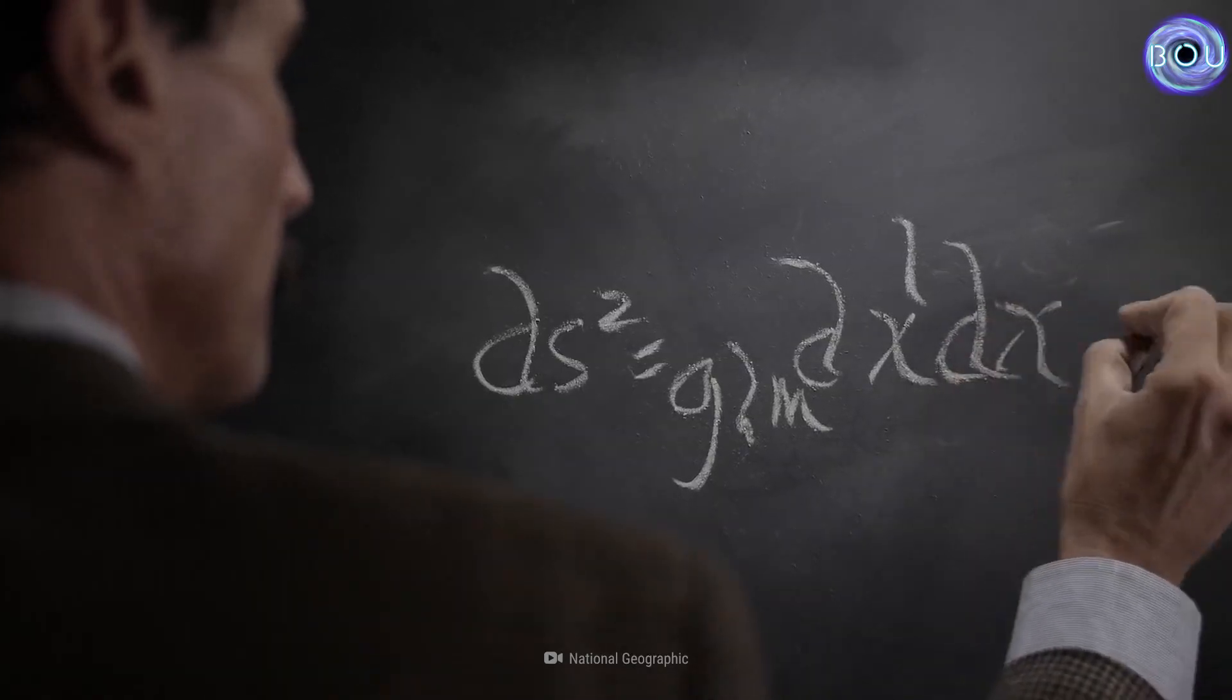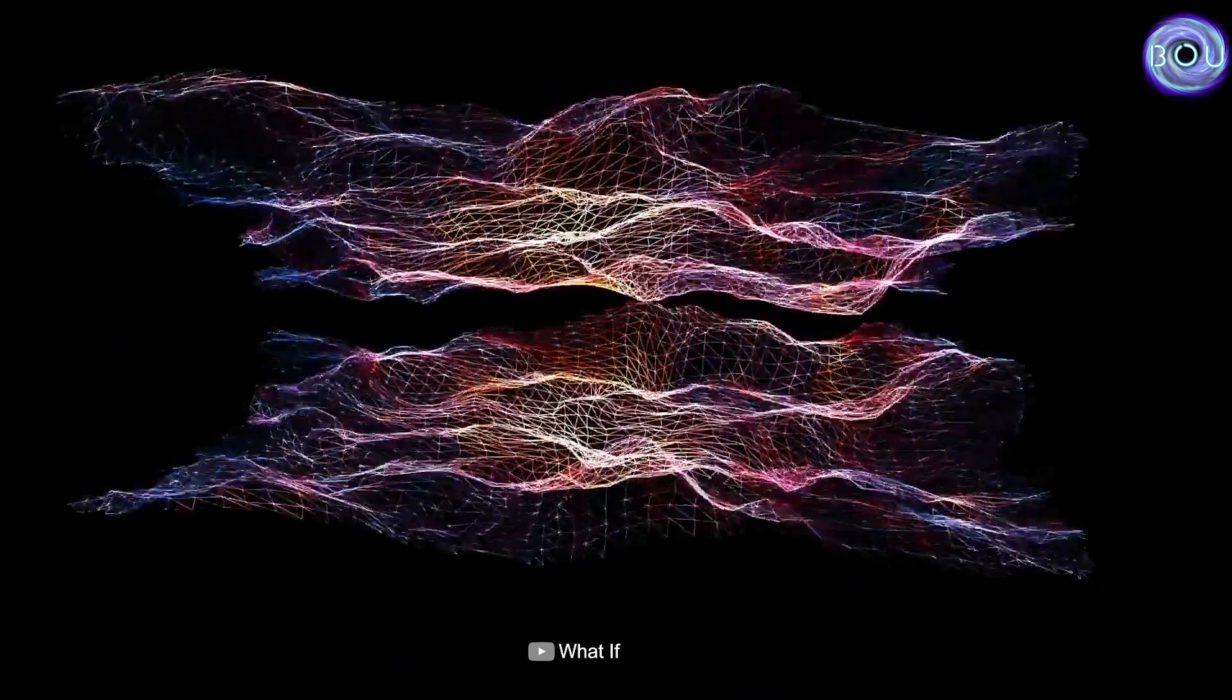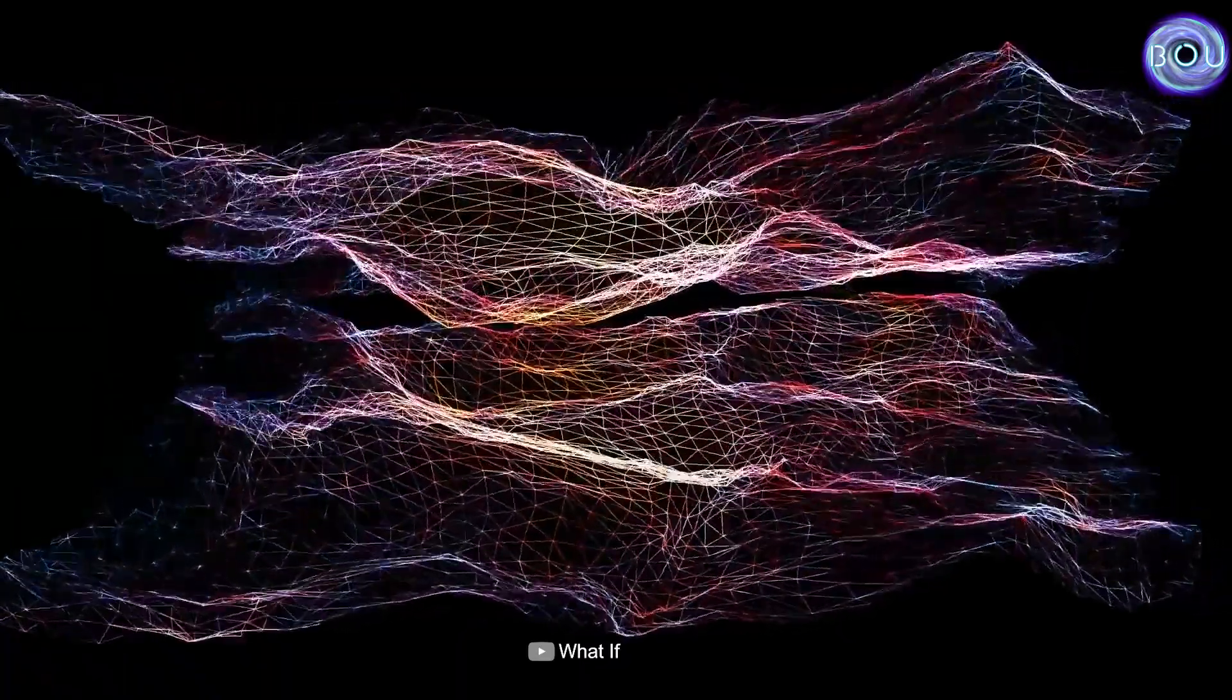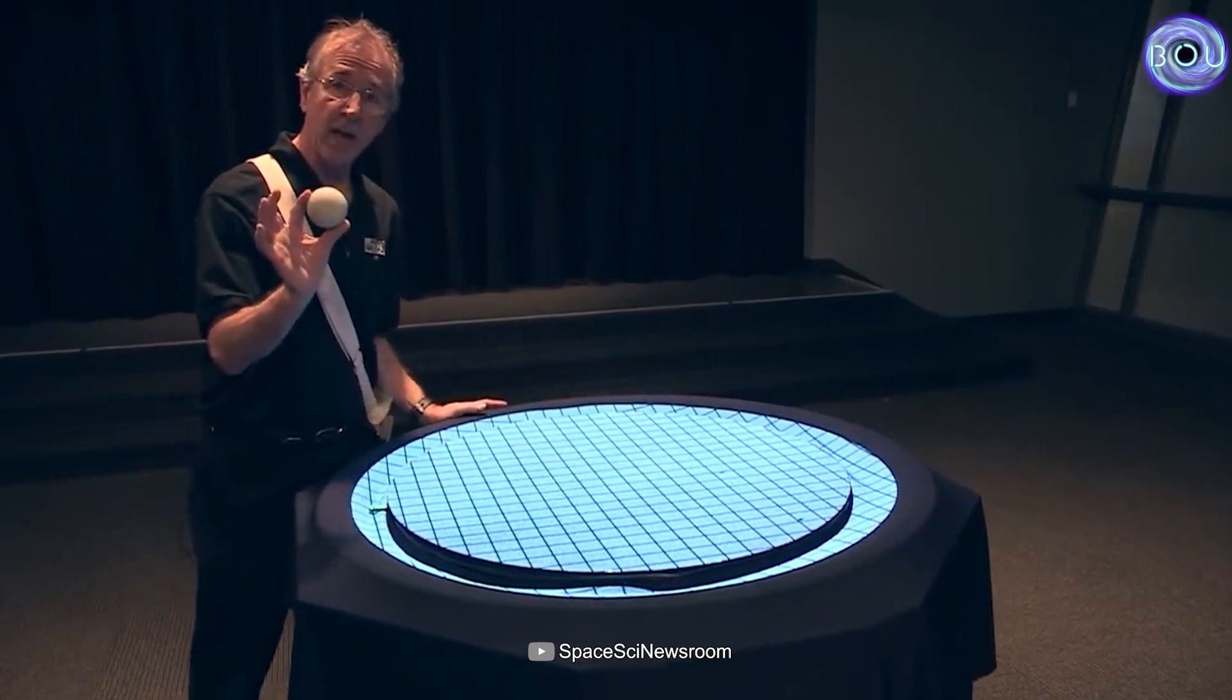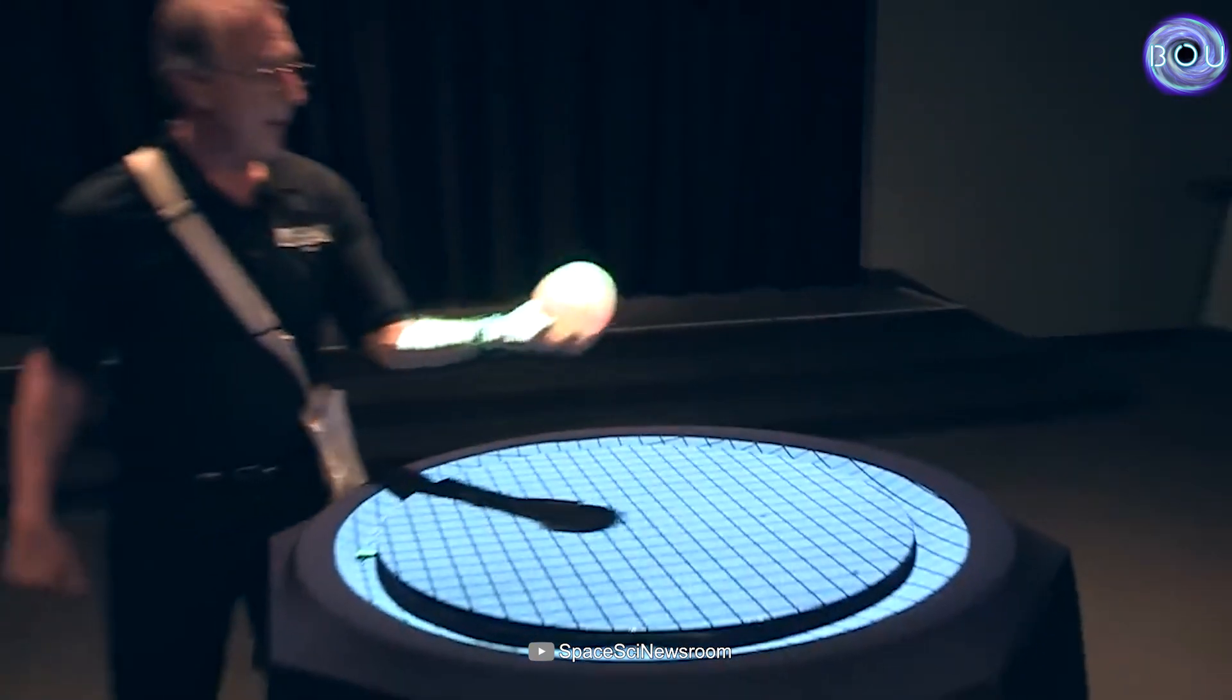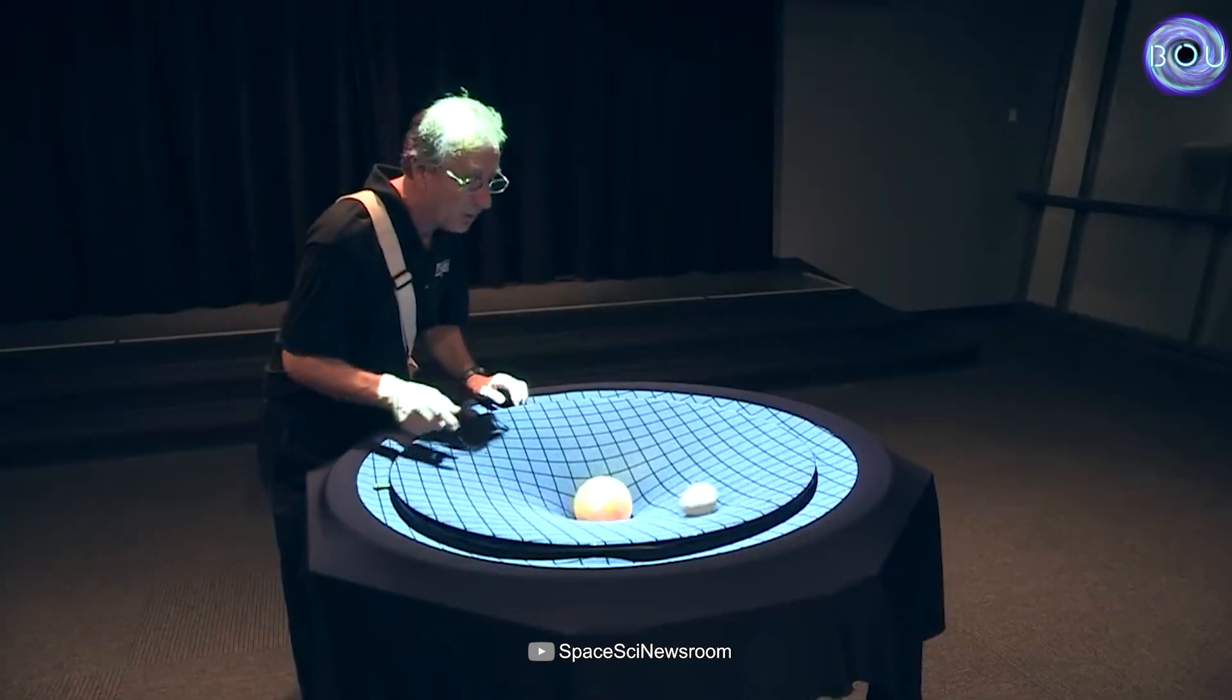Einstein said that the entire universe, even the empty spaces within it, is formed by a structure called space-time, which is woven together like the fabric of a cloth. Imagine this fabric of space-time spread out in two dimensions. When no mass is placed on this space-time fabric, it will not bend. But as soon as a mass is placed on it, the fabric will bend, and it will attract any object around it towards itself.